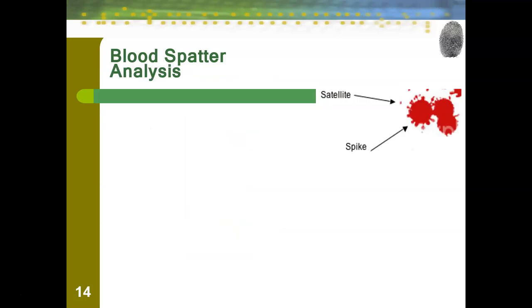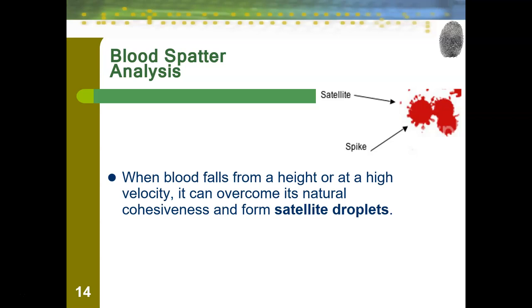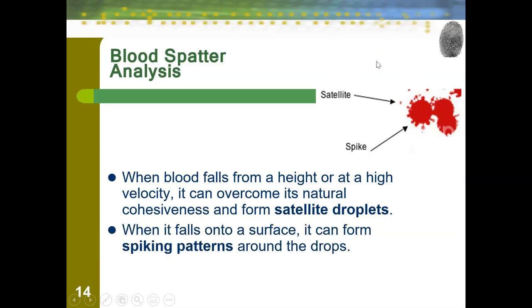One of the things that happens when blood falls is it creates two things called spikes and satellites. When blood falls from a height or a high velocity, it can overcome its natural cohesiveness and form satellite droplets — those are the little droplets that have escaped the overall pattern. This is compared to spiking patterns, when the drops have these rough edges. Notice that they're still connected to the main drop, but blood does not create smooth circles when it falls. These characteristics influence all the blood spatter patterns we are able to create.